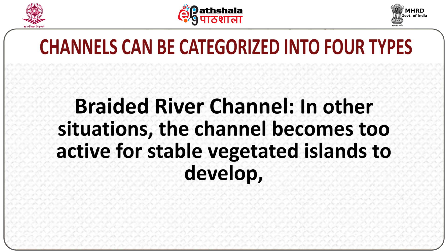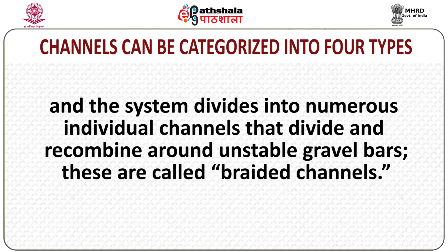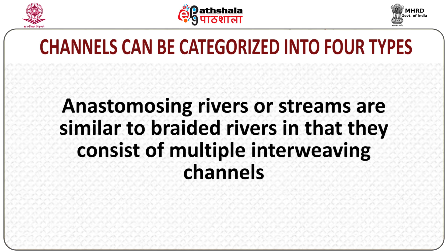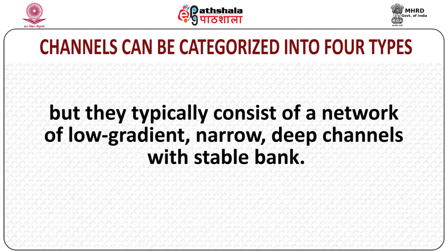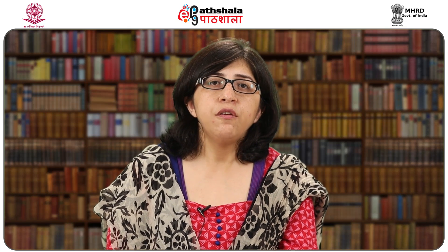Lastly are braided river channels. In situations where the channel becomes too active for stable vegetated islands to develop, the river system divides into numerous individual channels that divide and recombine around unstable gravel bars; these are called braided channels. Anastomizing river channels are similar to braided channels in that they consist of multiple intertwining channels, but they typically consist of a network of low-gradient, narrow, deep channels with stable banks.